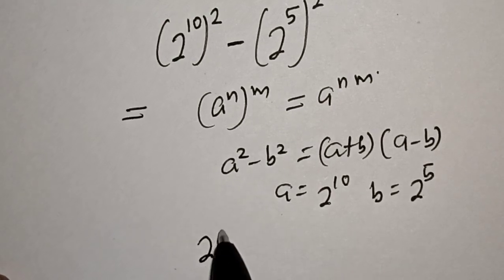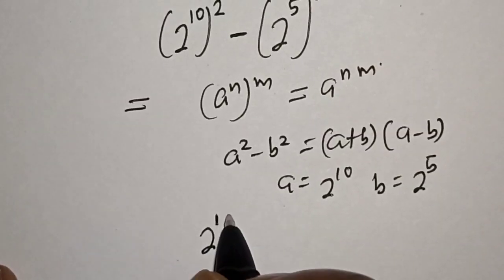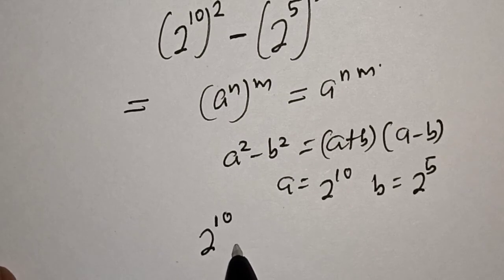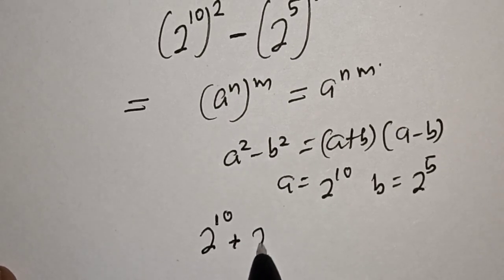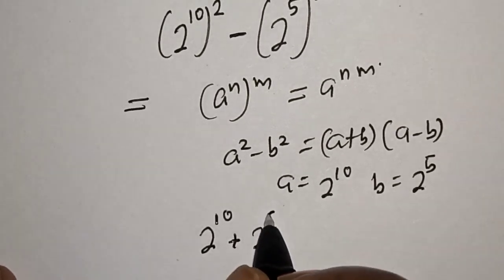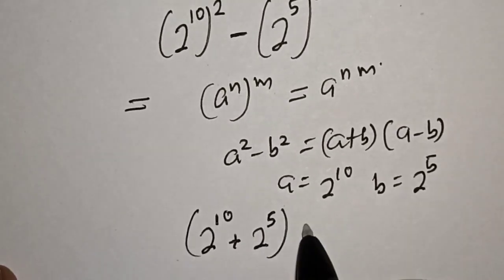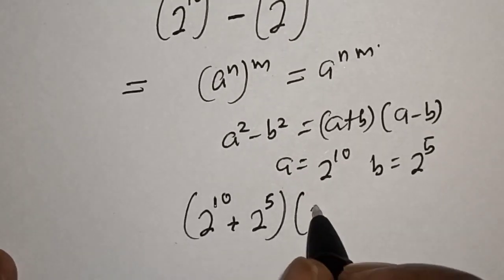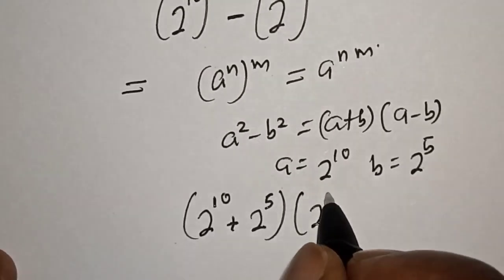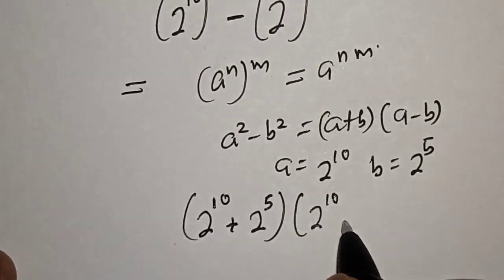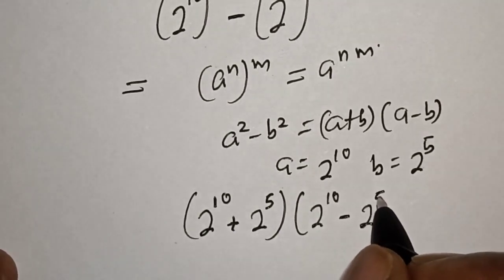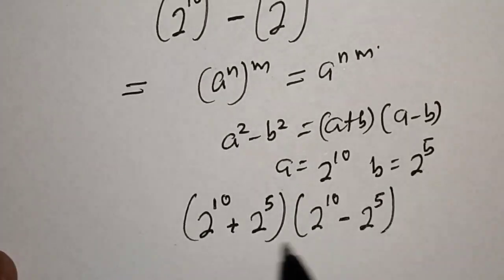This gives us: 2 raised to power 10 plus 2 raised to power 5, multiplied by 2 raised to power 10 minus 2 raised to power 5.